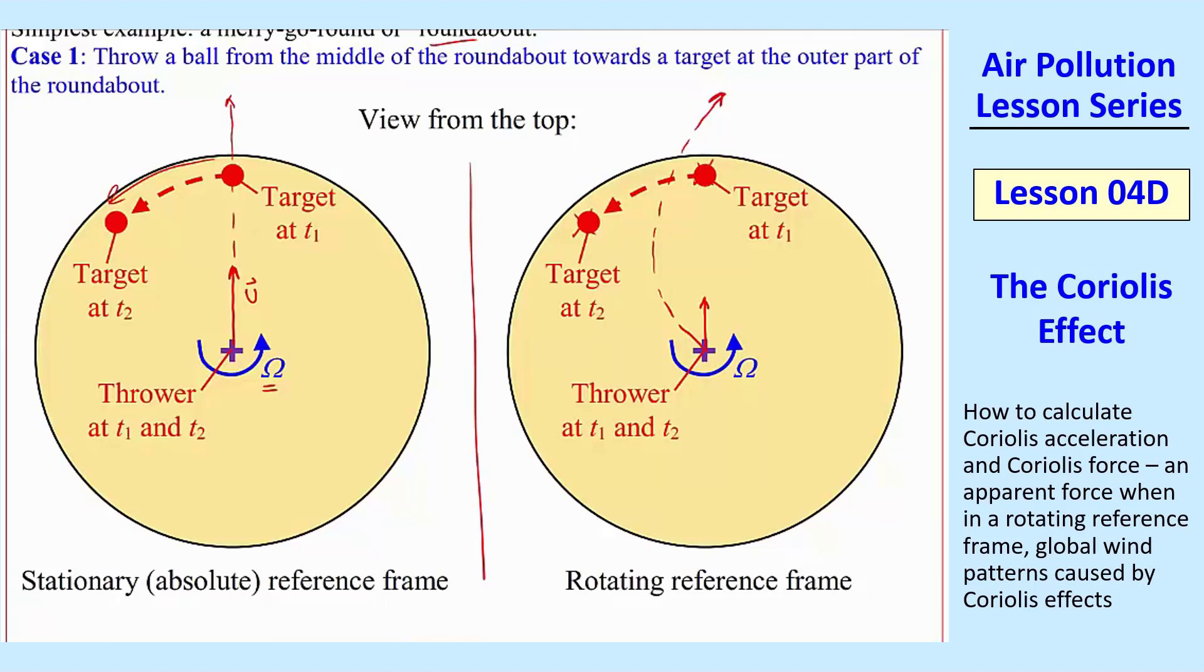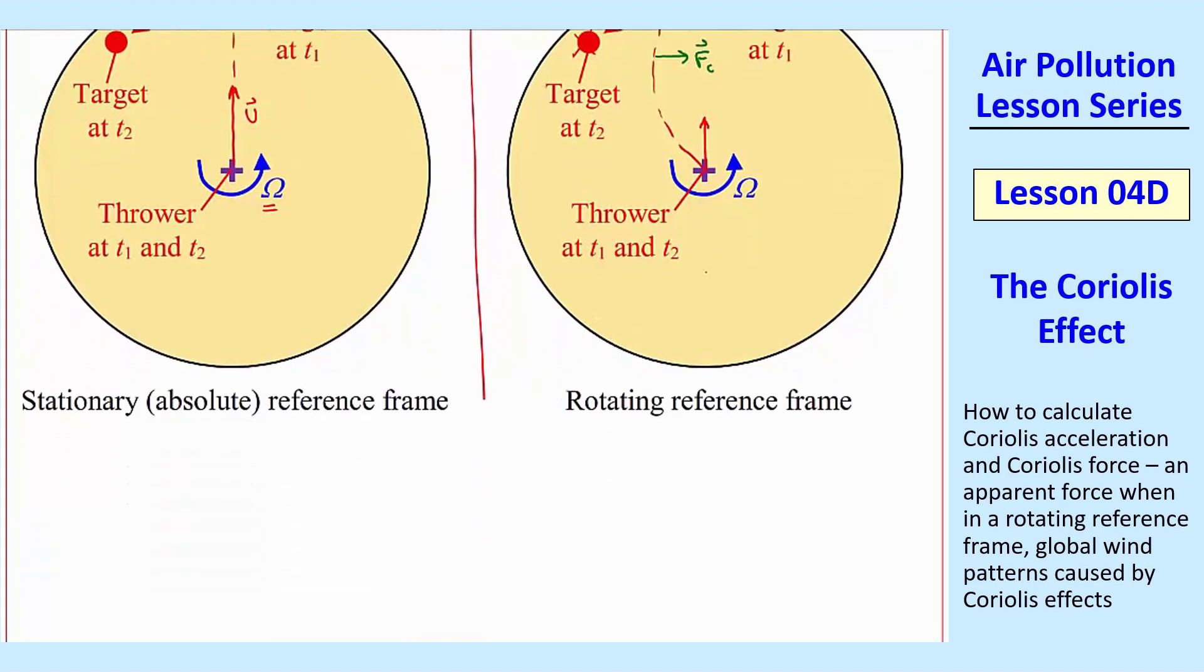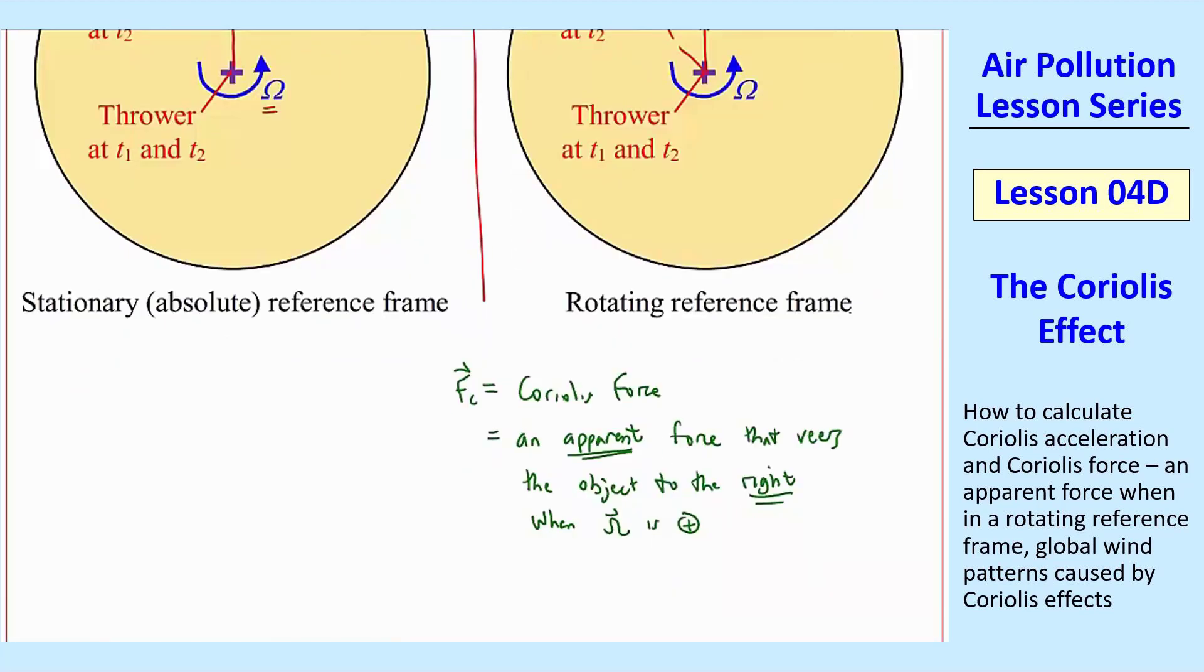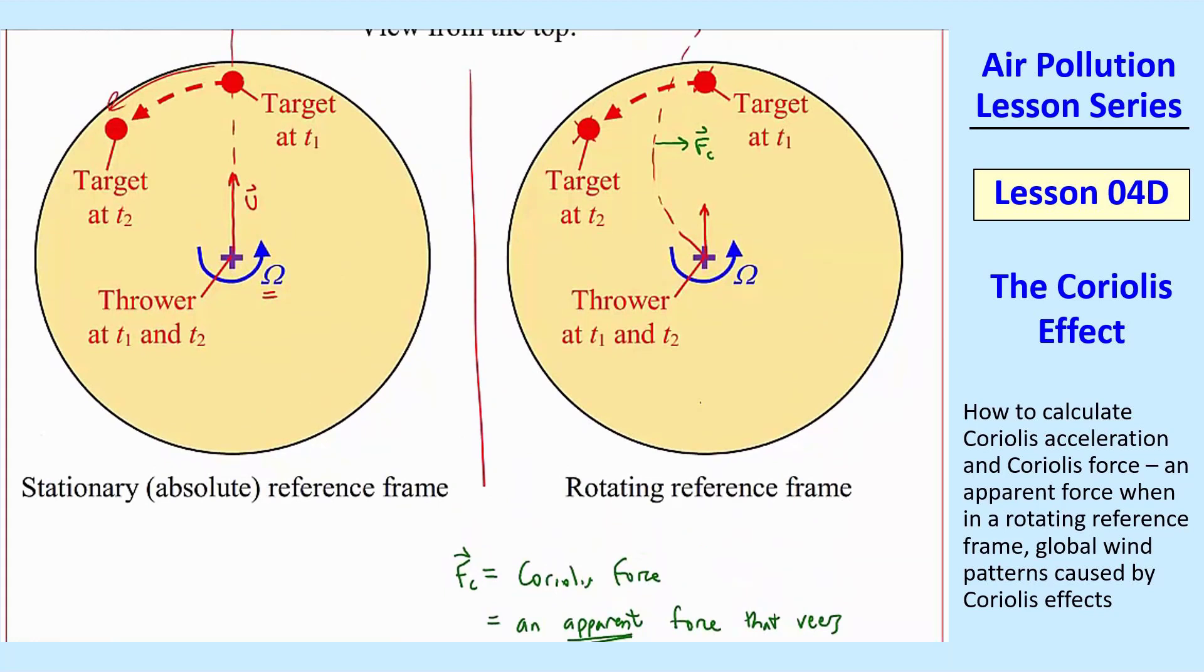And in terms of forces or accelerations, there's an apparent Coriolis force, FC, that is to the right. And so it always veers to the right when you are in this rotating reference frame. So this Coriolis force, FC, is what we'll call it, Coriolis force is an apparent force that veers the object to the right when omega is positive, positive in a right-hand rule kind of view.